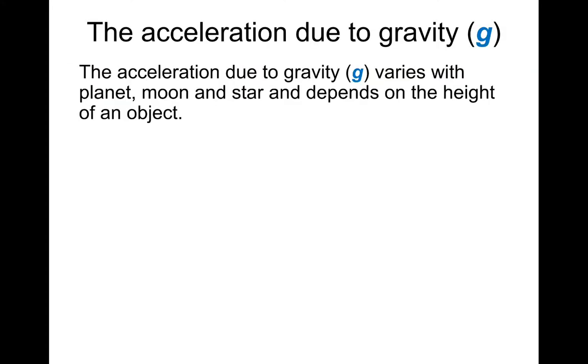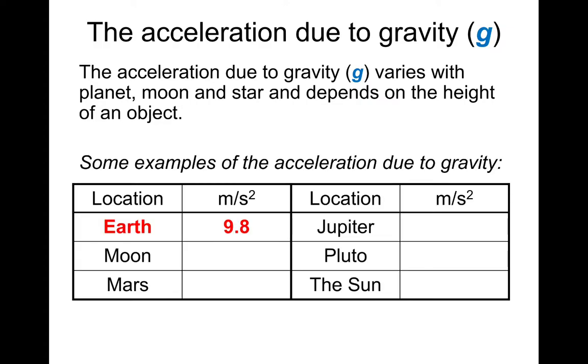The acceleration due to gravity, or g as we call it, varies with the planet, moon, or star that you're near and depends on the height of an object above it. Here's some examples. The surface gravity for Earth is 9.8 meters per second squared. This could also be 9.8 newtons per kilogram. You need to remember that—it won't be given to you in a test.